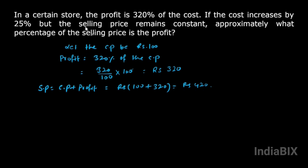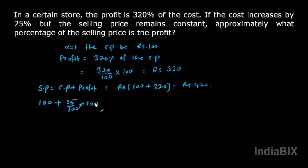Now there is a change in condition: the cost price increases by 25% but the selling price remains constant. First, let us apply the given condition — cost price is 100 and it increases by 25%, so 25% of 100 gives a new cost price of rupees 125.